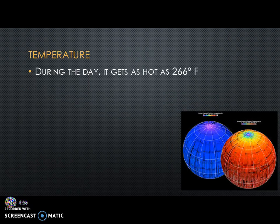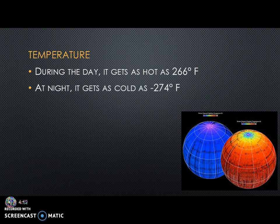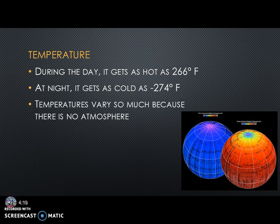The moon's temperature during the daytime gets as hot as about 266°F, and at nighttime as cold as negative 274°F. These extremes occur because there's no atmosphere. Our atmosphere acts like a blanket — remember the greenhouse effect — keeping heat trapped and giving us stable temperatures. Without it, all heat gained during the day is lost at night, which is exactly what happens on the moon.